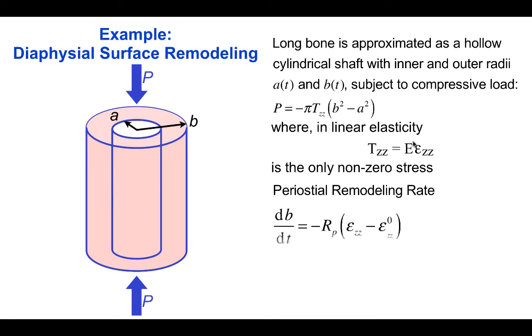The periosteal remodeling rate or the rate at which the bone outer diameter changes, db/dt, is proportional to ε_zz, the compressive strain, minus ε_zz⁰, the growth equilibrium strain.